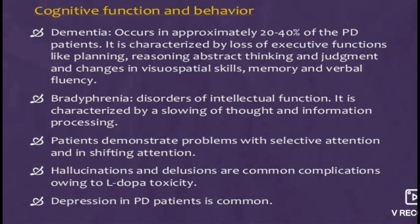Dementia occurs in approximately 20% to 40% of Parkinson's disease patients, characterized by loss of executive functions like planning, reasoning, abstract thinking, and judgment, along with changes in visuospatial skills, memory, and verbal fluency. Bradyphrenia refers to a slowing of thought and information processing, with problems in selective attention. Hallucinations and delusions are common complications owing to L-dopa toxicity. Depression is also common in Parkinson's disease patients.